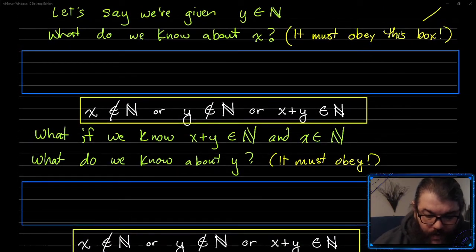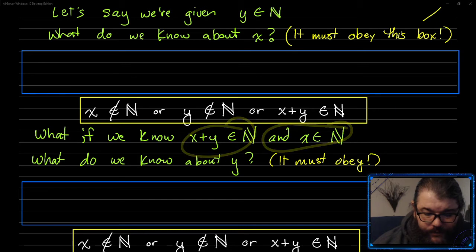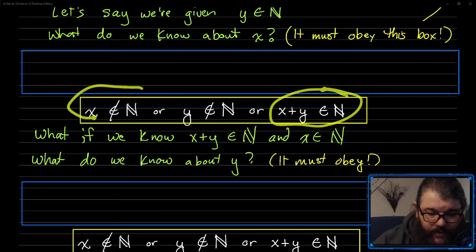Alright, so what if we know that x plus y is a natural number, and x is a natural number, right? So if we know x plus y is a natural number, and we know that x is a natural number, which is false, but this is true, what do we learn about y?